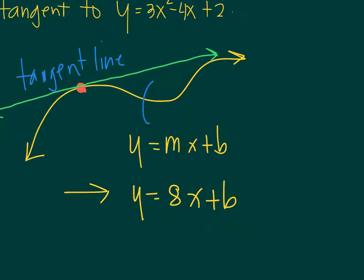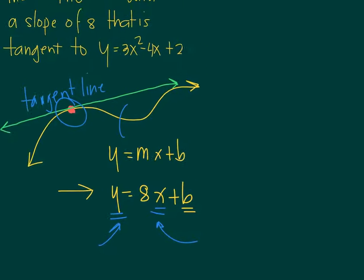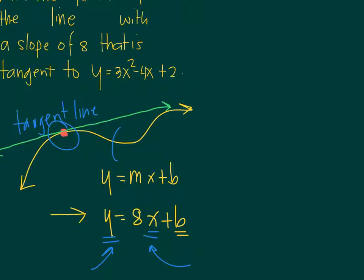Now the second value that we need to find is b. So how are we going to find the b? To find the b, we need to really find what is that point, that red point there, what is the x value and the y value, because that point is contained in the tangent line. So a new problem is like, what will be that point? How can we identify that point?